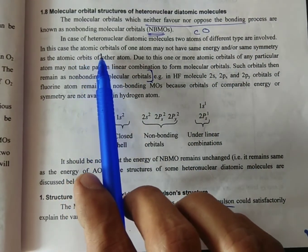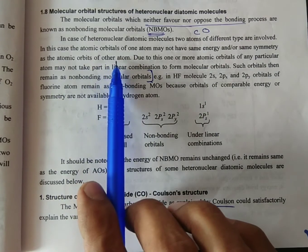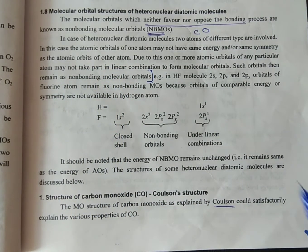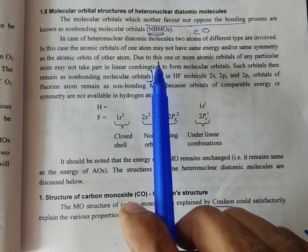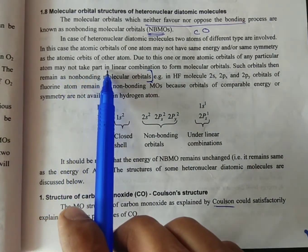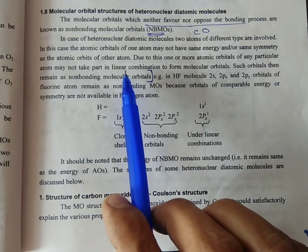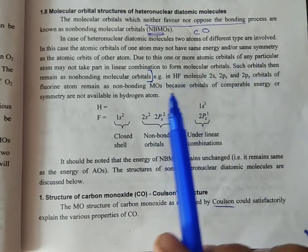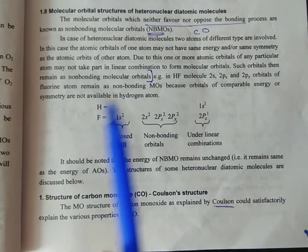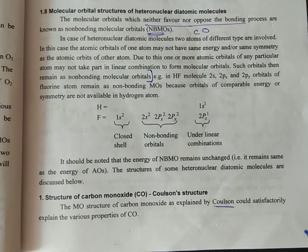In this case, the atomic orbitals of one atom may not have the same energy or same symmetry as the atomic orbitals of the other atom. Due to this, one or more atomic orbitals of any particular atom may not take part in linear combination. It means that those atomic orbitals are not involved in the bonding process, and the molecular orbitals are not formed. These orbitals remain as non-bonding molecular orbitals.